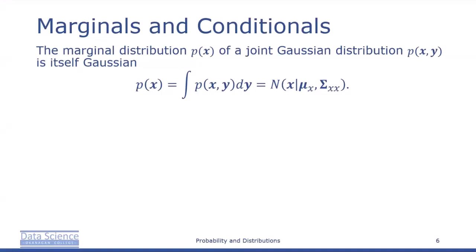The marginal distribution p of x of a joint Gaussian distribution p of x and y is itself Gaussian, and is computed by applying the sum rule. It is given by p of x equals the integral of p of x and y dy, and that's normally distributed with mean mu and covariance matrix sigma. A similar result holds for p of y, which we obtain by marginalizing with respect to x. Intuitively, we integrate out everything we're not interested in from the joint distribution.